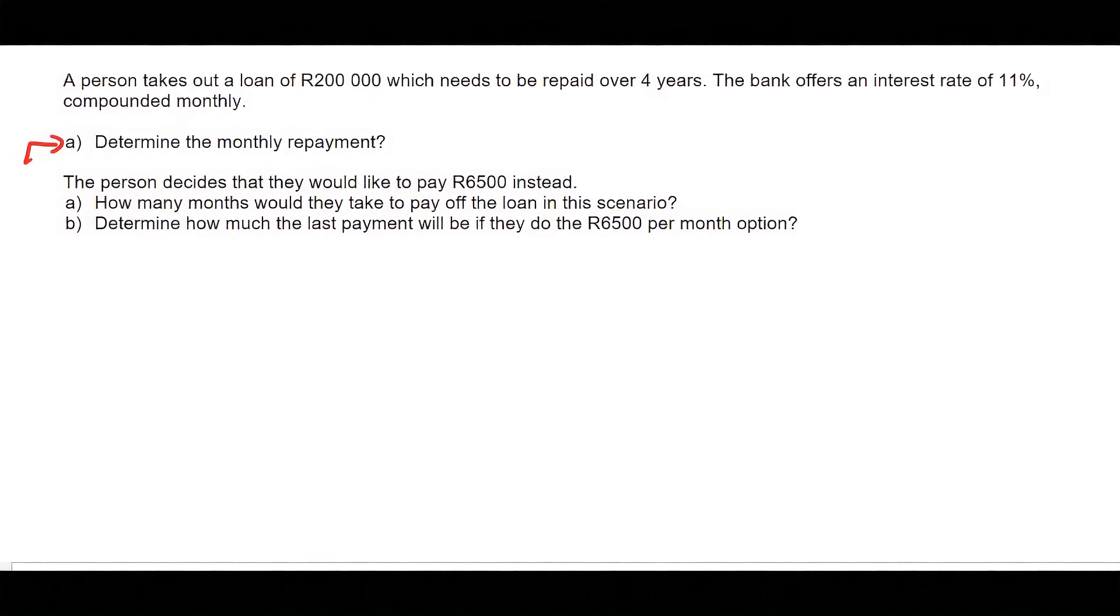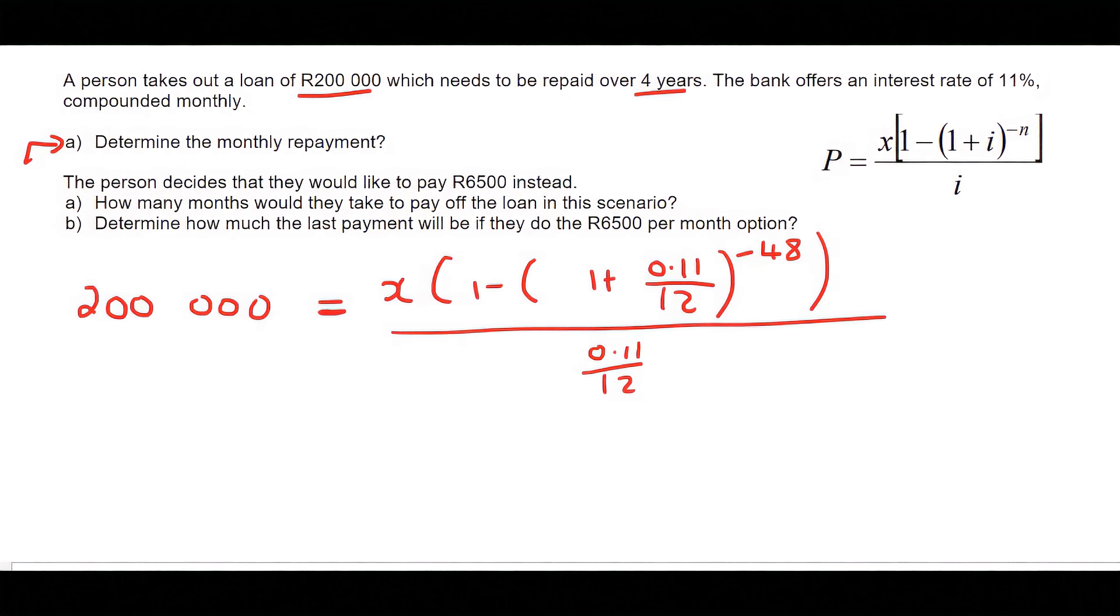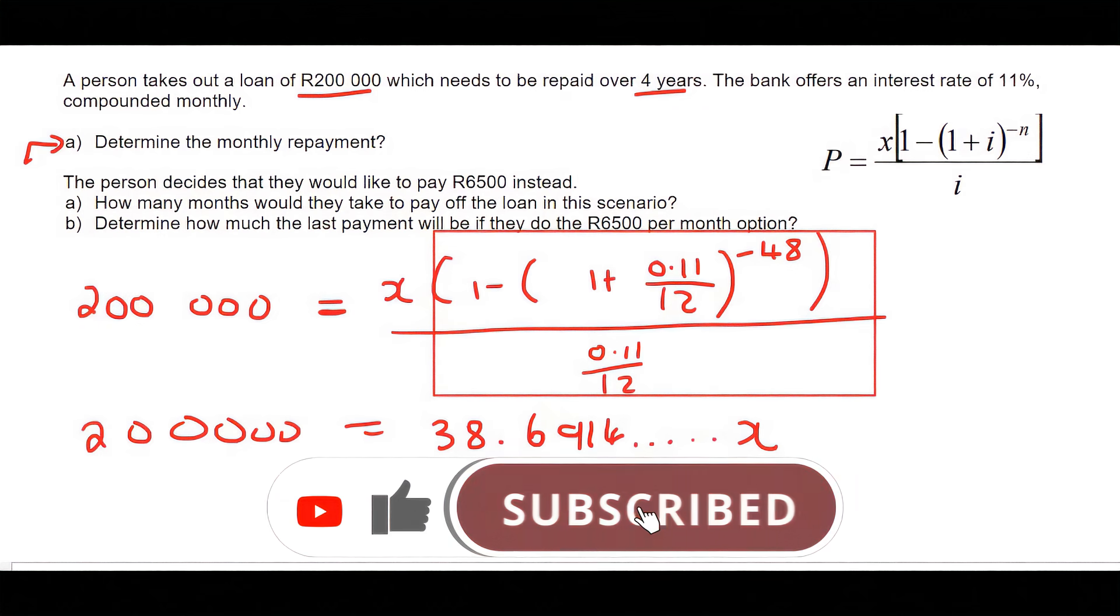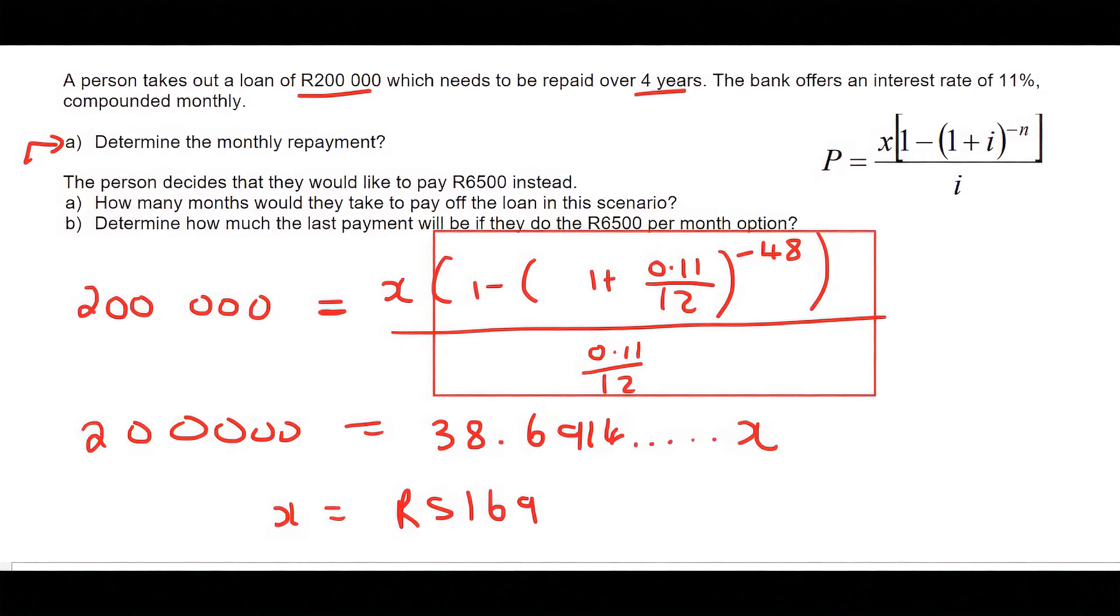Let's do question A first. We have a person taking out a loan of 200,000 Rand. When you take out a loan, that money is given to you immediately, so it's definitely the present value formula. The present value is 200,000 and we don't know what X is. The interest rate is 11% compounded monthly over 4 years, so 4 times 12 equals 48. To get X alone, type everything in that bracket on your calculator—that's 38.6914 and so on. Then 200,000 divided by answer gives us 5169.10.